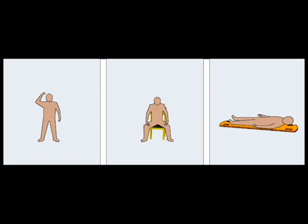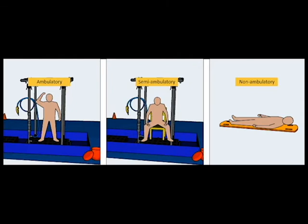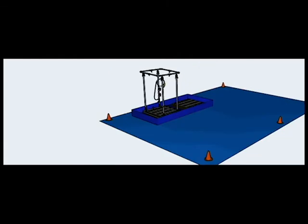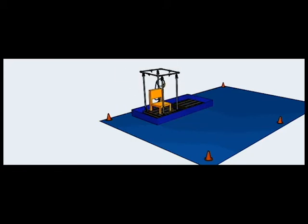There are three ways that patients move through the decontamination process: walking or ambulatory, seated or semi-ambulatory, and lying on a backboard or non-ambulatory. Each mode of presentation requires a slightly different configuration of the decon corridor. The corridor may also be reconfigured several times throughout the emergency decontamination operation, depending on the number of patients, their mode of presentation, and the arrival intervals associated with this event.